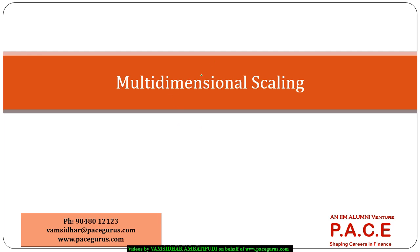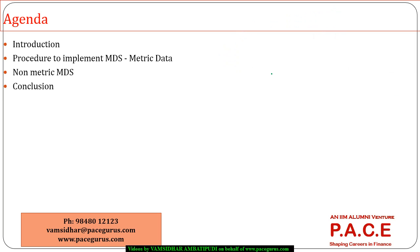In this session, I am going to talk about multidimensional scaling, which is another procedure of dimension reduction, just like a few other techniques we have discussed earlier, whether it is principal component analysis or exploratory factor analysis. Even multidimensional scaling is primarily targeted towards reducing the dimension structure of the data, but each of these techniques does this reduction in a different manner.